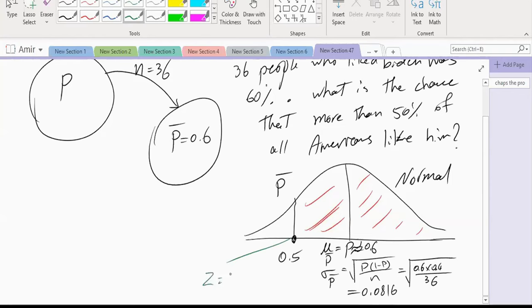Z is equal to 0.1 divided by 0.0816, which equals 1.2254. In the table, we have 1.22 and 1.23. Which one is closer?